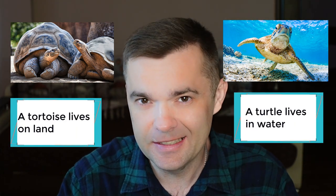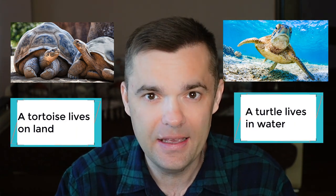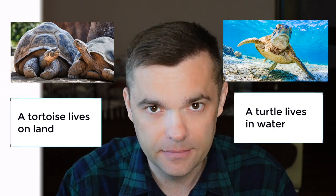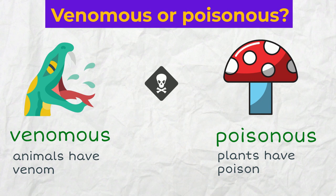What is the difference between a tortoise and a turtle? A tortoise is a type of turtle, but it lives only on land, not in water. A lot of reptiles, snakes in particular, are venomous. So plants are poisonous, and animals are venomous because they have venom.